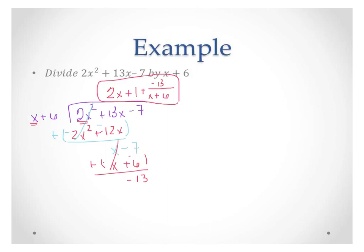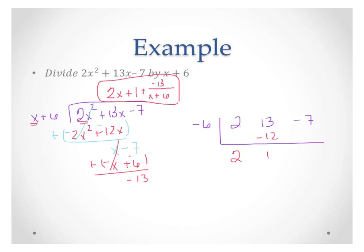I want to show you the connection between long division and synthetic division — remember we did synthetic substitution. Write your coefficients: 2, 13, and negative 7. On the outside we put negative 6. Drop the first number, so we drop 2. Multiply to get negative 12, add to get 1, multiply to get negative 6, add to get negative 13. This started as x squared, x to the first, and x to the zero. So the bottom numbers become 2x to the first plus 1, plus your remainder negative 13. There's your answer — the same one we got.